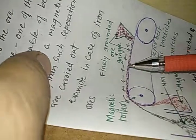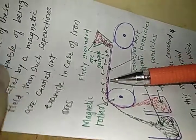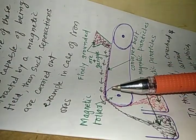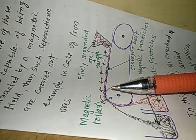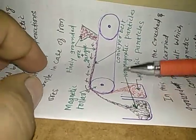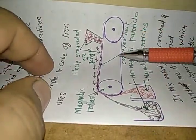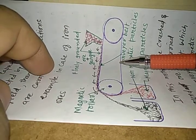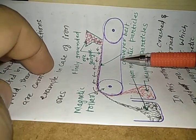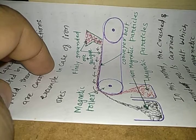An example of magnetic separation is in the case of iron ores, which are generally attracted by magnets. The detailed diagram for this magnetic separation method will be studied in the next period. Happy learning, dear students.